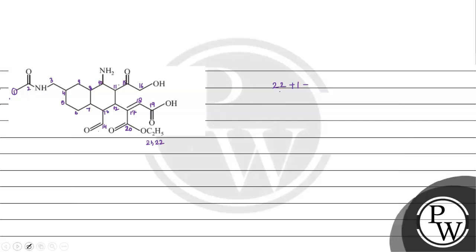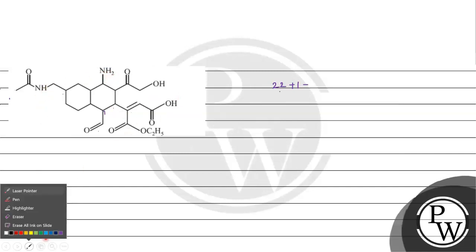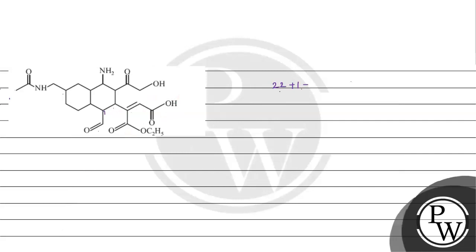Now let's count the number of hydrogens. How many nitrogen atoms are there? One, two — there are two nitrogen atoms. So plus two divided by two. Halogen atoms are zero, so zero divided by two. Now we need to find the hydrogen atoms.